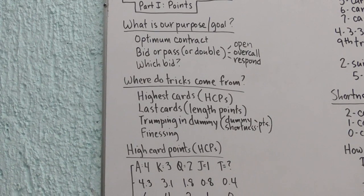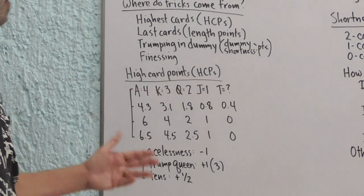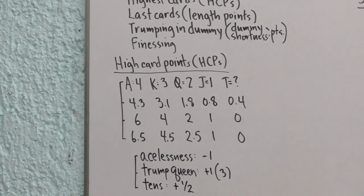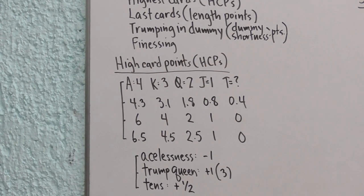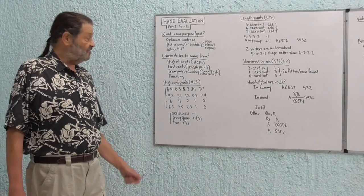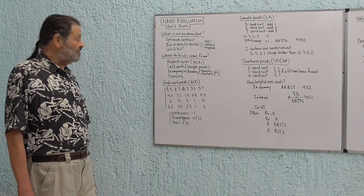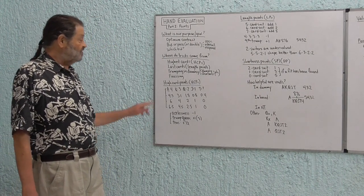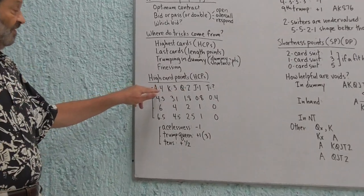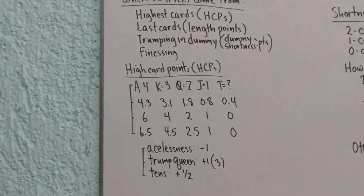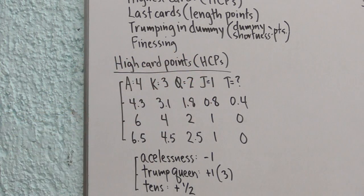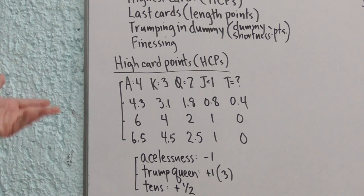Now, let's begin with high card points. This is a system we've all been taught. Aces are worth four, kings are worth three, queens are worth two, jacks are worth one, and tens are generally not assigned any value at all. British theorists and experts through the decades have instructed us that this isn't really reflective of the relative strengths of those cards. This card is not exactly twice as strong as this card, even though this ace gets four points and the queen gets two points. So, there are modified versions of this 4-3-2-1 system that we wanted to spend a moment looking at.